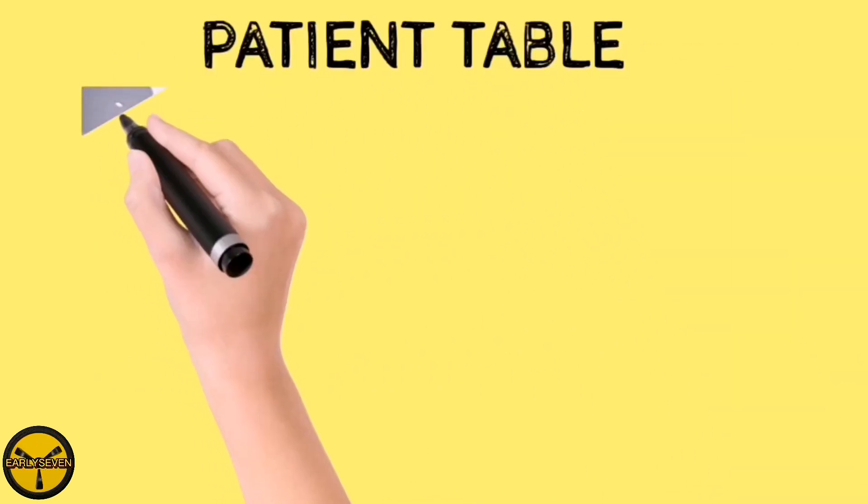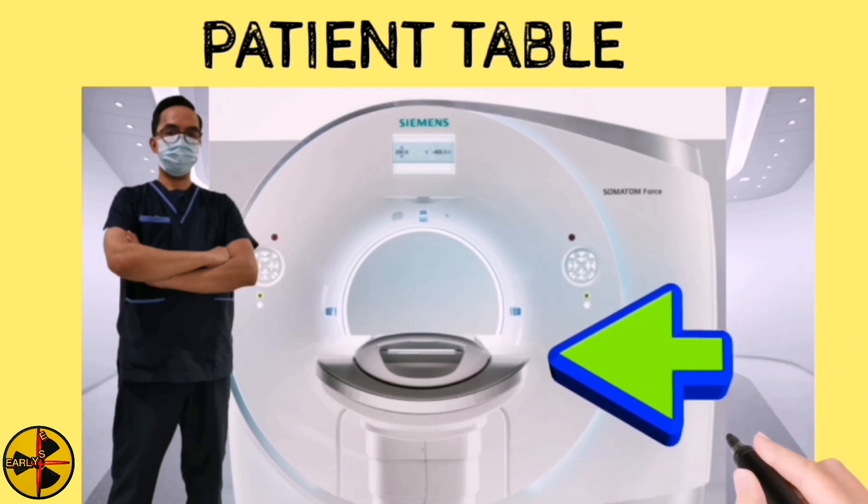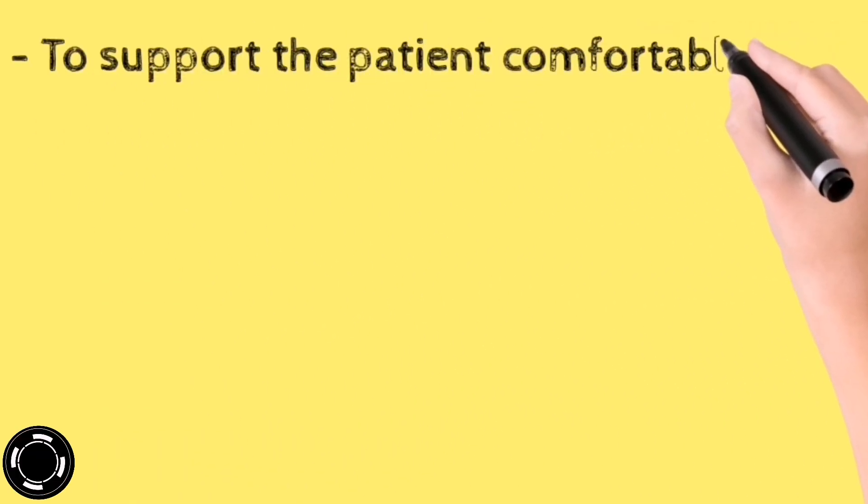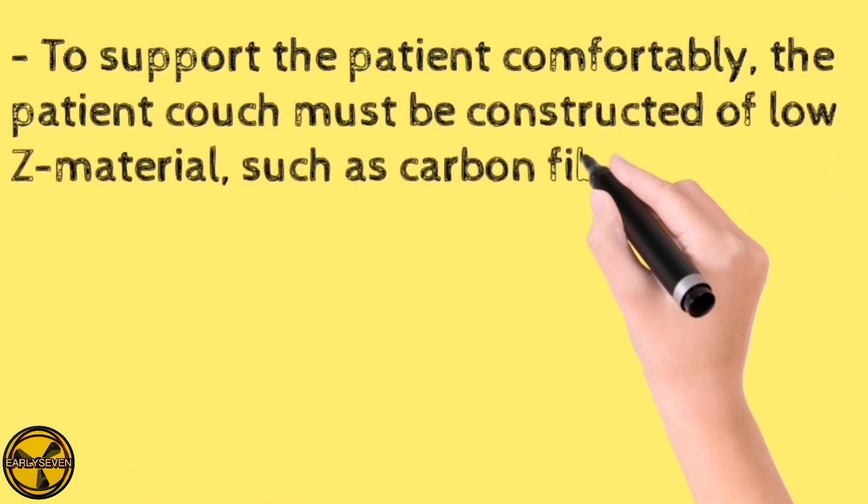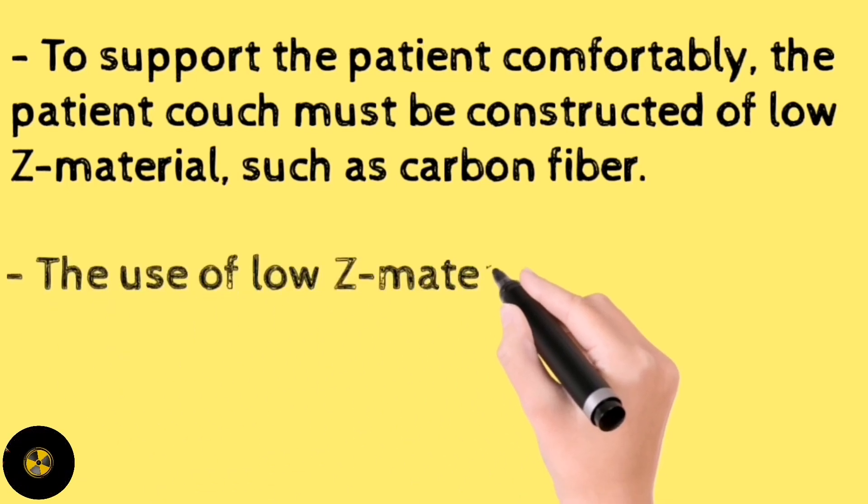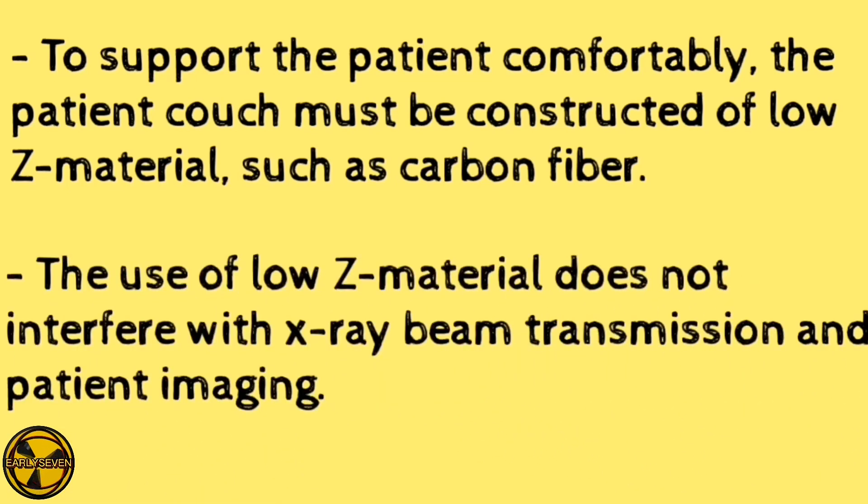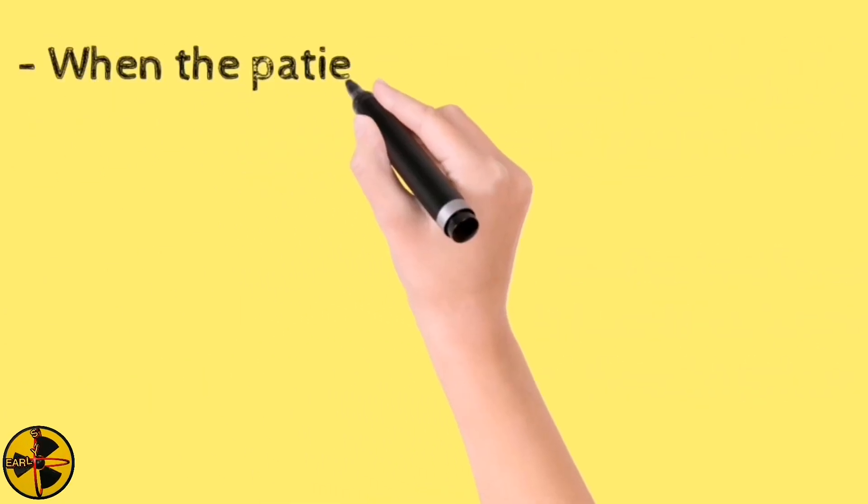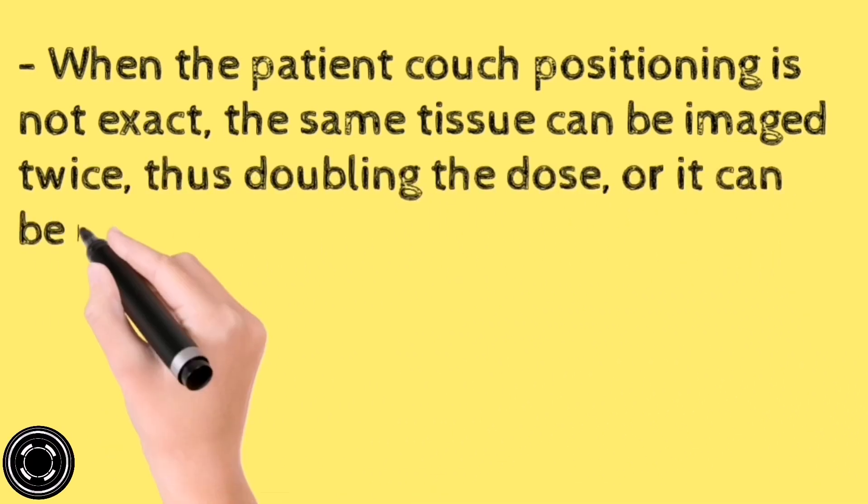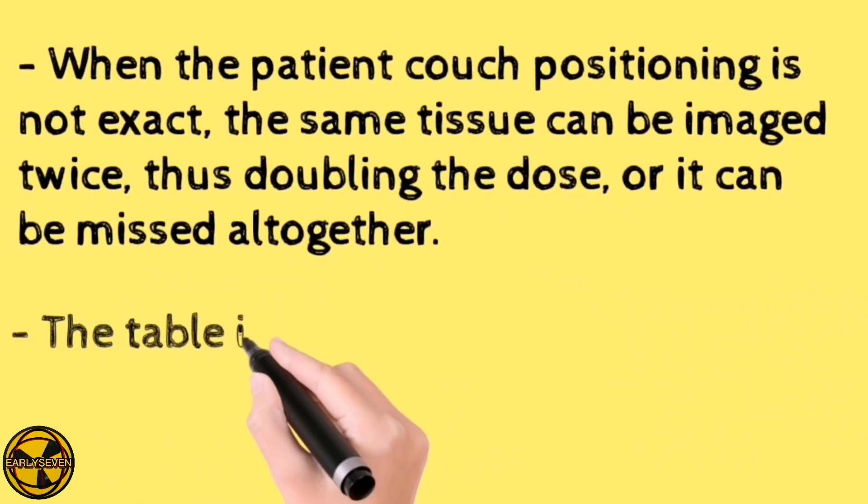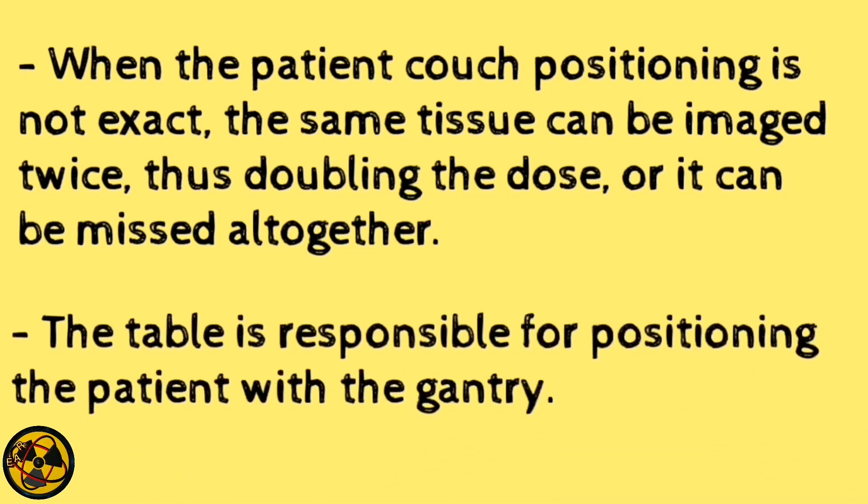Another component of a CT scanner is the patient's table. To support the patient comfortably, the patient couch must be constructed of low atomic material, such as carbon fiber. The use of low atomic material does not interfere with x-ray beam transmission and patient imaging. When the patient couch positioning is not exact, the same tissue can be imaged twice, thus doubling the dose, or it can be missed altogether. The table is responsible for positioning the patient with the gantry.